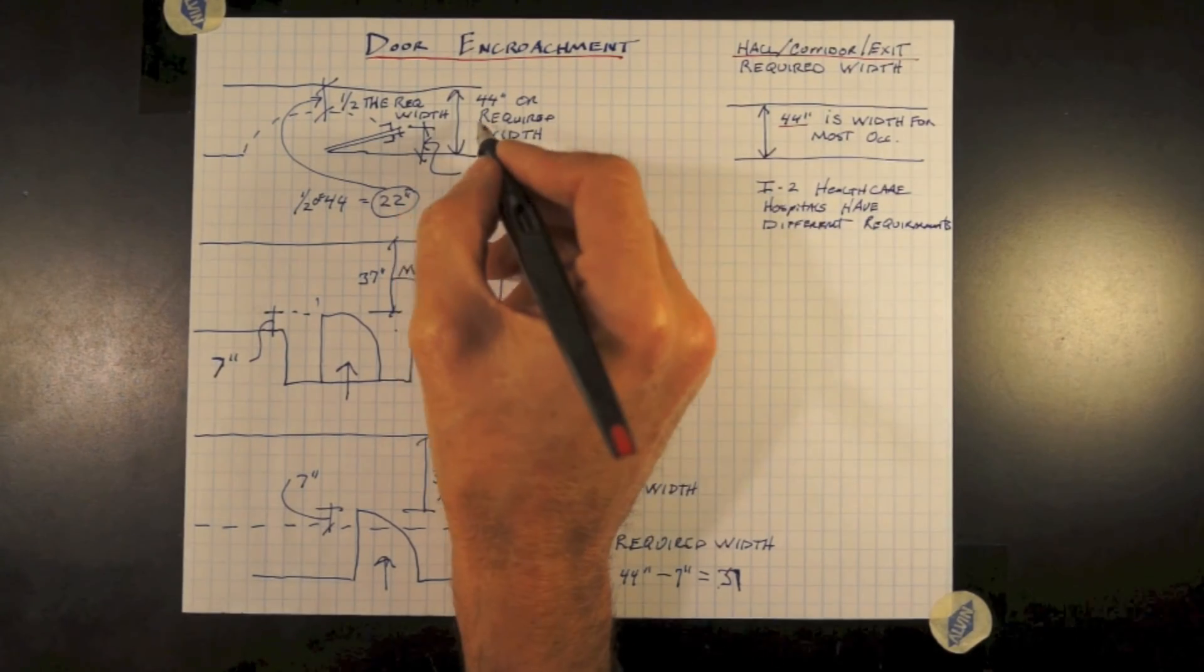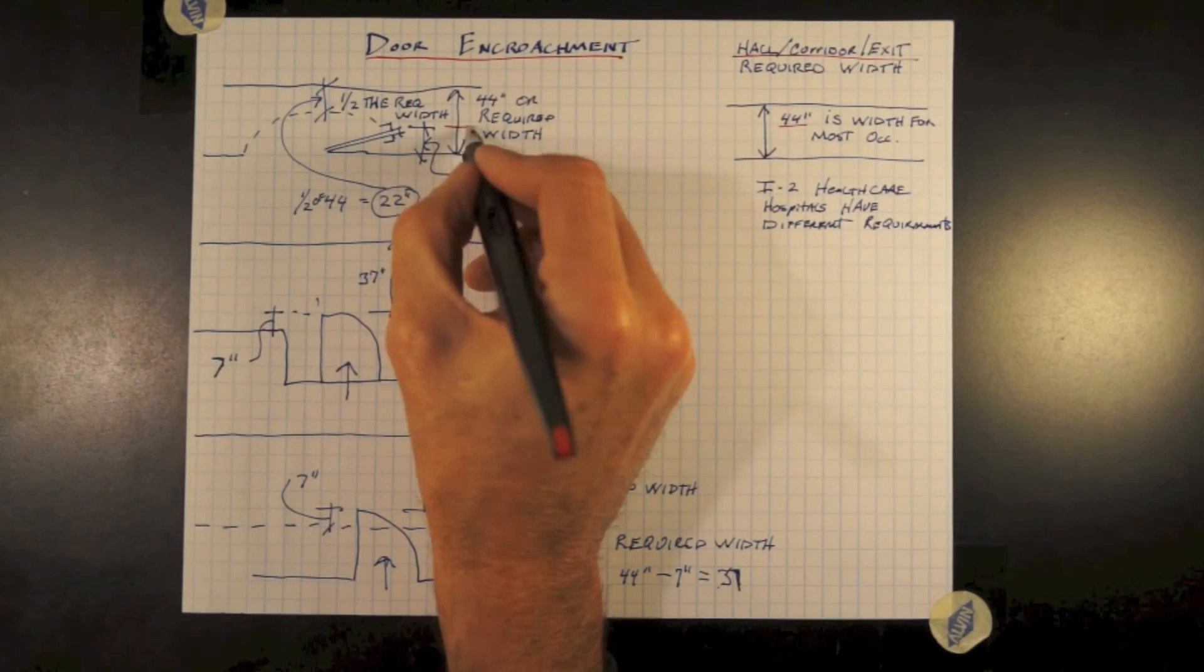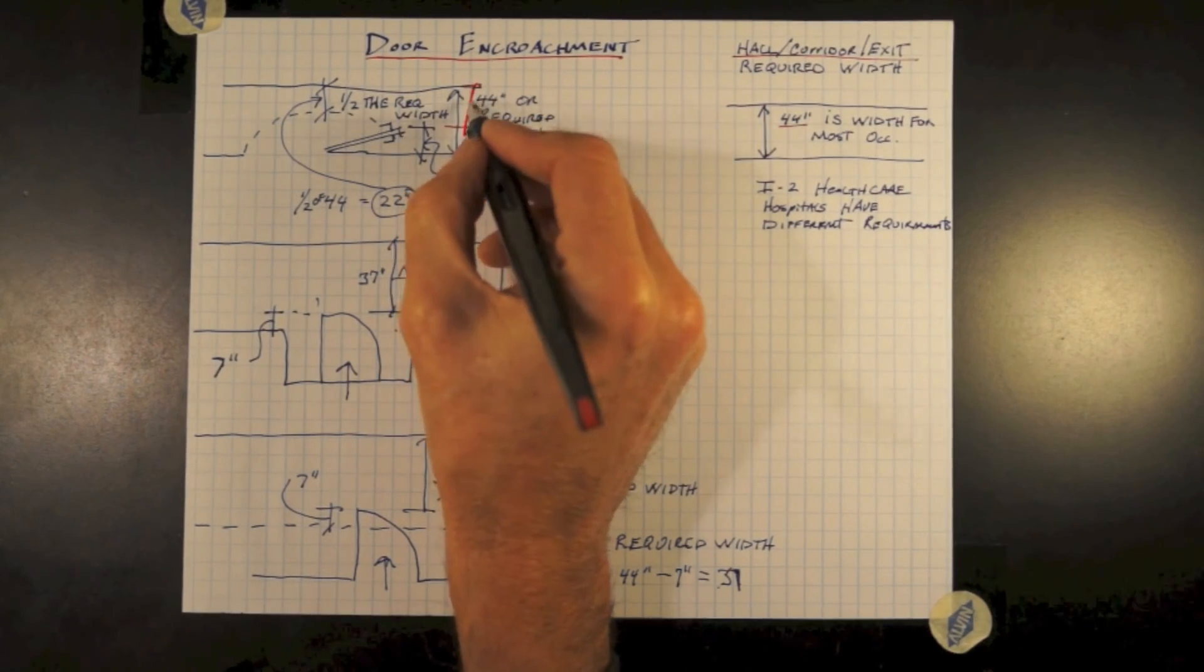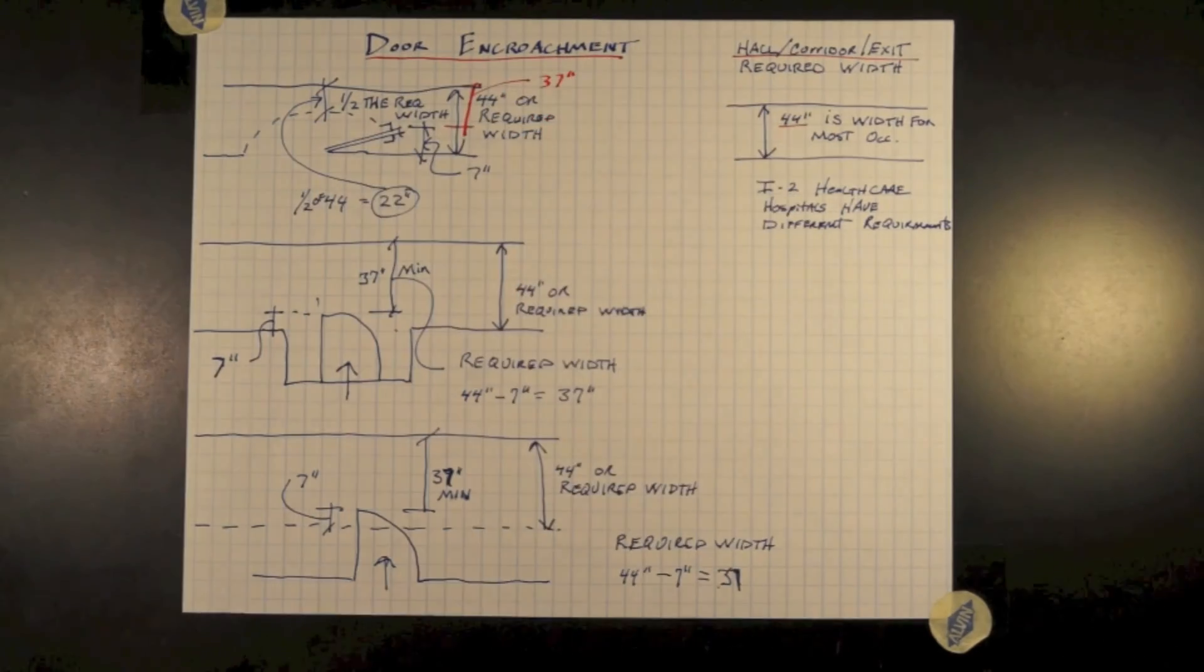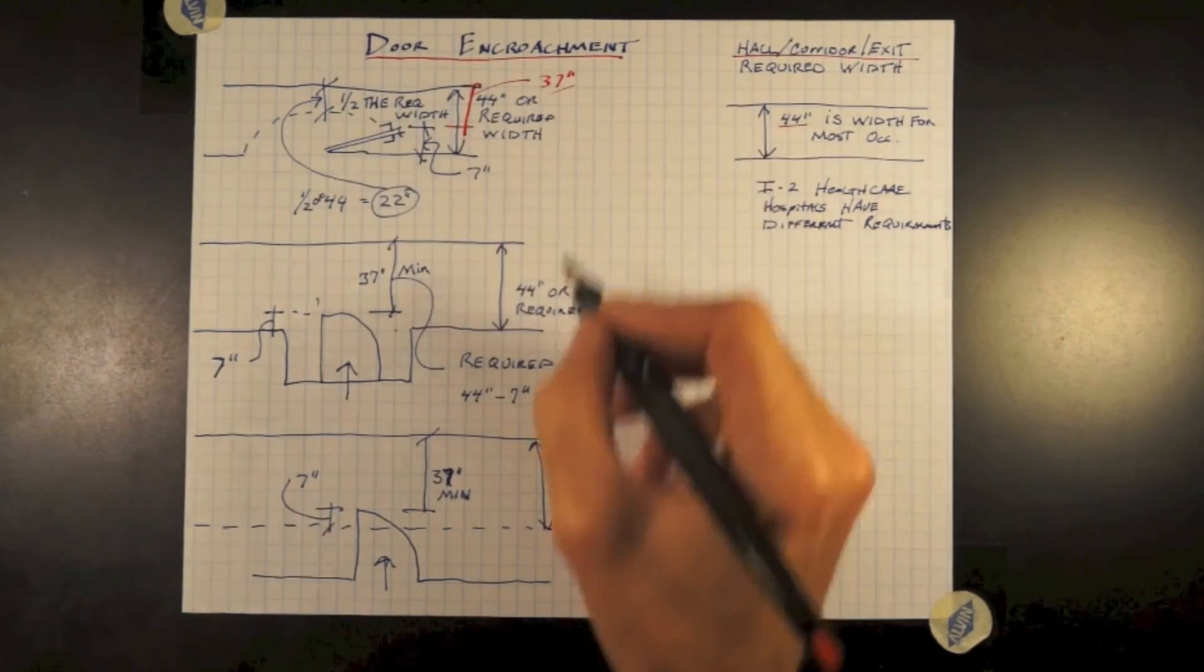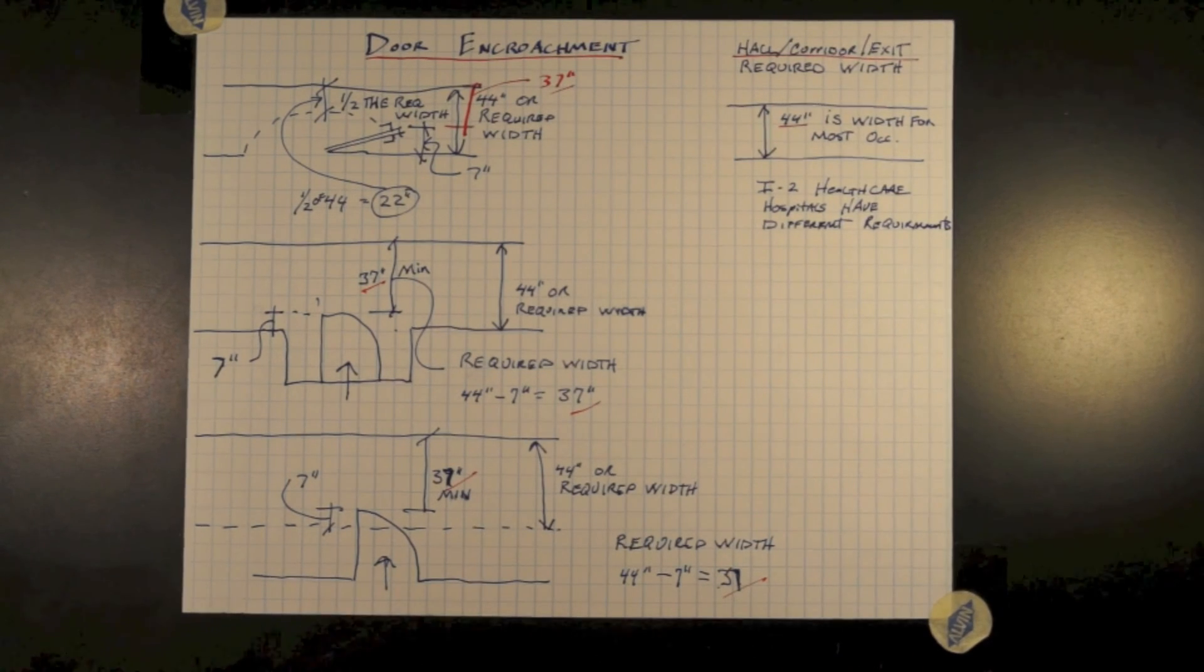And at any time the door only swings 90 degrees, the door cannot protrude out into the required width of the required corridor by more than 7 inches.